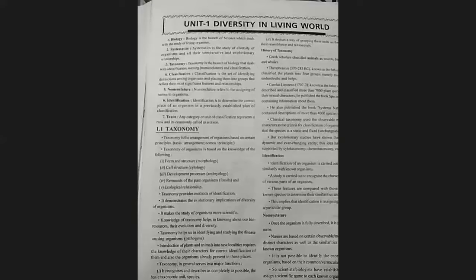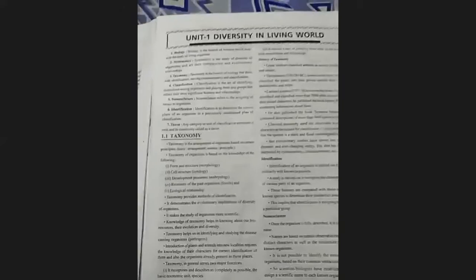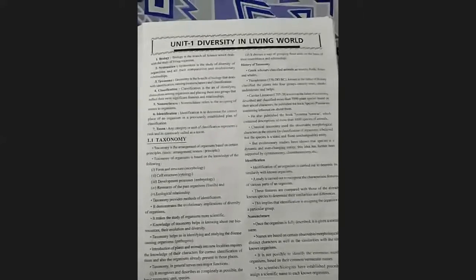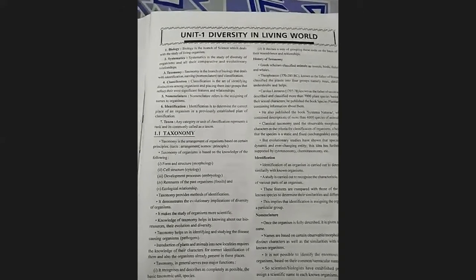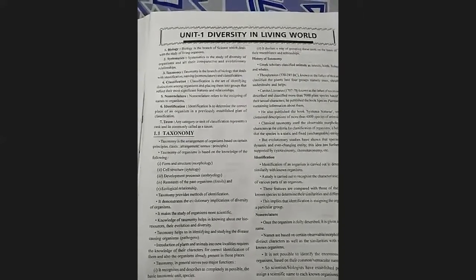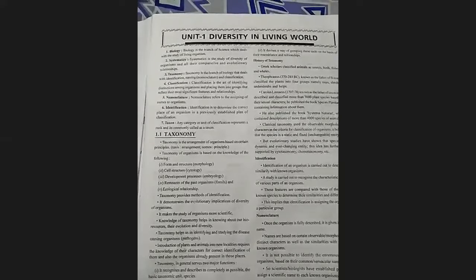We are starting the chapter 'Diversity in Living World' today. This is the first chapter in Botany and covers all basic terms. One question type has four options — the four options being identification, nomenclature, or taxonomy — so we have to read the wordings properly so that the definitions are clear.